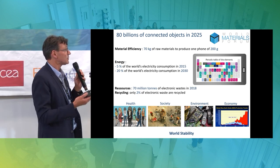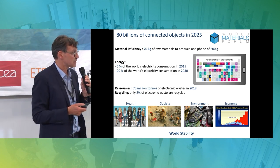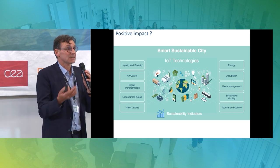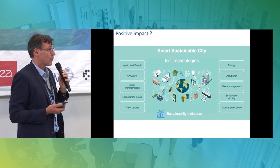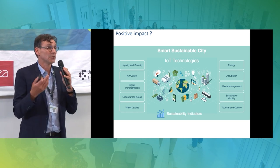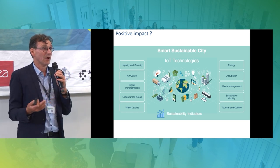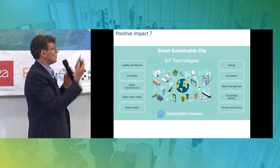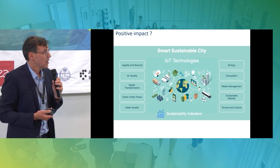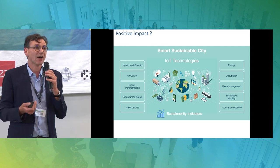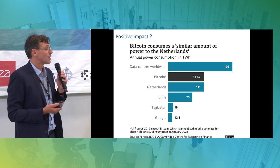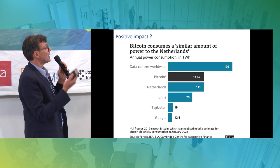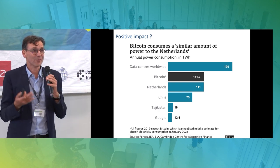There are real questions about health, society, environment, economy, and basically world stability. Does big data have a positive impact? Yes, of course. If we talk about smart cities, we can use electronics, computers, and artificial intelligence to reduce our energy consumption in different ways — looking at water, air, electricity, and so on. But does it always have a positive impact? I'm not so sure. One example is bitcoins — the amount of power used for bitcoins is about similar to the power used by the Netherlands, comparable to one country. This sounds crazy.